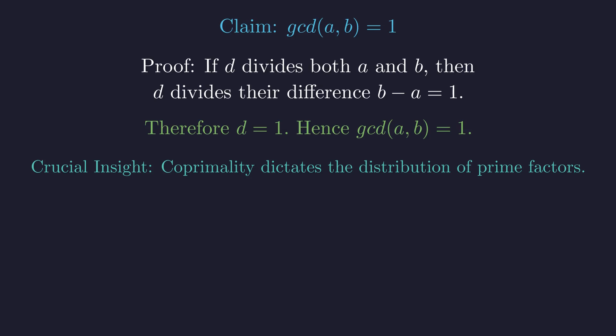This coprimality is the crucial insight. It strictly dictates how the prime factors on the right-hand side can be distributed between a and b.